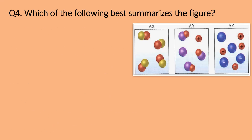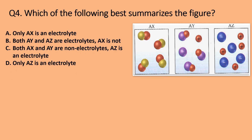Question 4: Which of the following best summarizes the figure? The options are: A. Only AX is an electrolyte. B. Both AY and AZ are electrolytes; AX is not. C. Both AX and AY are non-electrolytes; AZ is an electrolyte. D. Only AZ is an electrolyte. As seen in the figure, in AX there is no dissociation of positive and negative ions. In AY there is partial dissociation, and in AZ there is complete dissociation. Hence, the correct option is B: both AY and AZ are electrolytes, and AX is not.